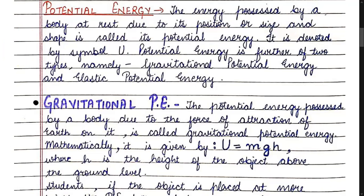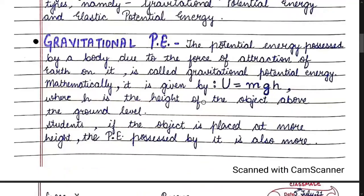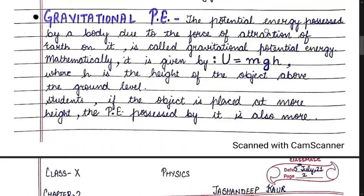Potential energy is further classified as gravitational potential energy and elastic potential energy. Gravitational potential energy is the potential energy possessed by a body due to the force of attraction of the earth on it — that is, the force due to gravity.